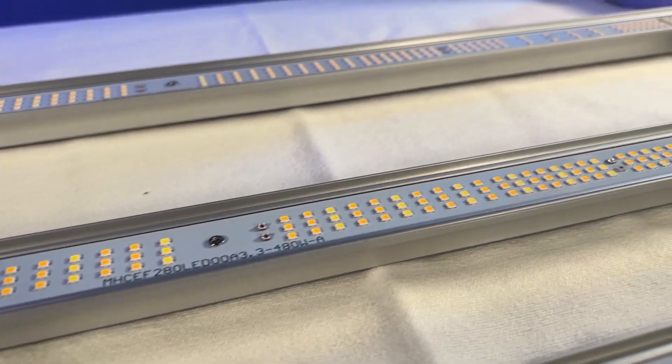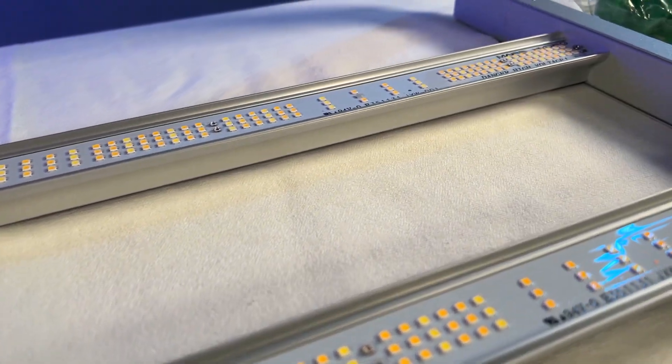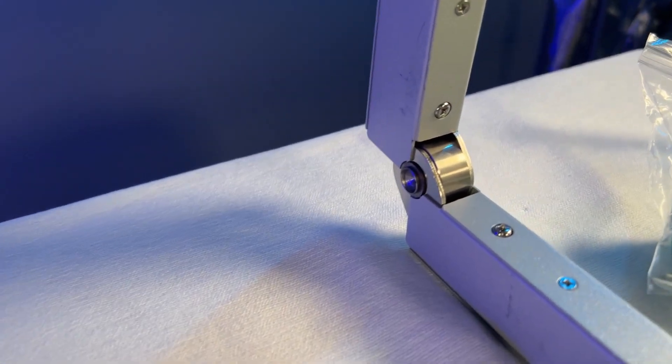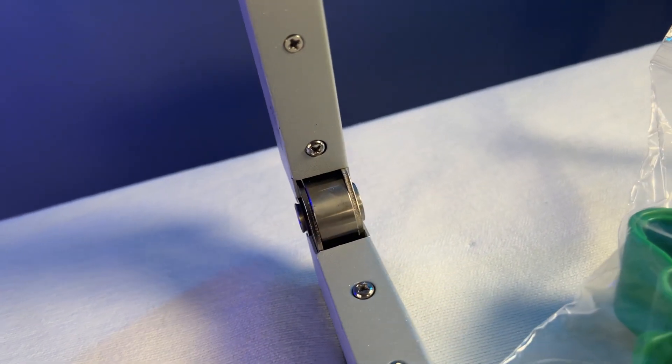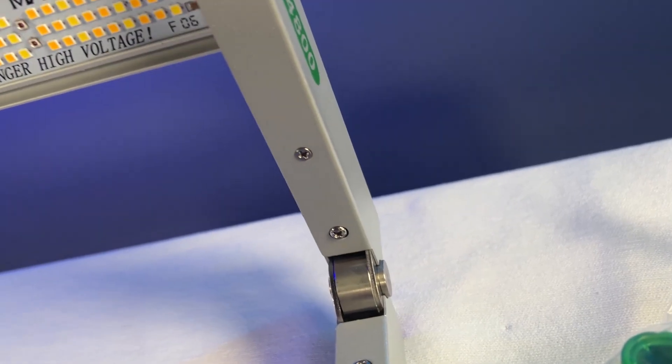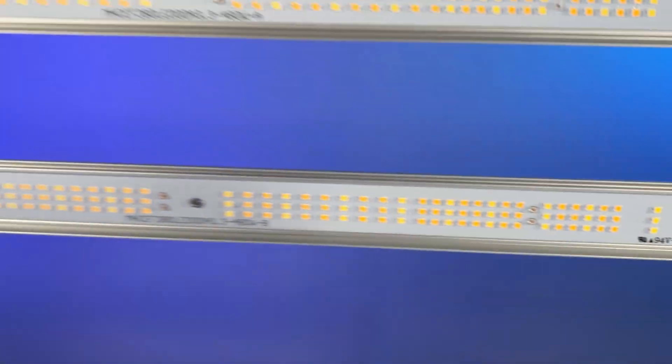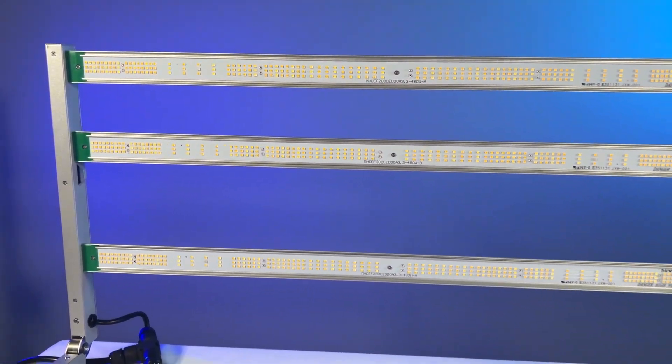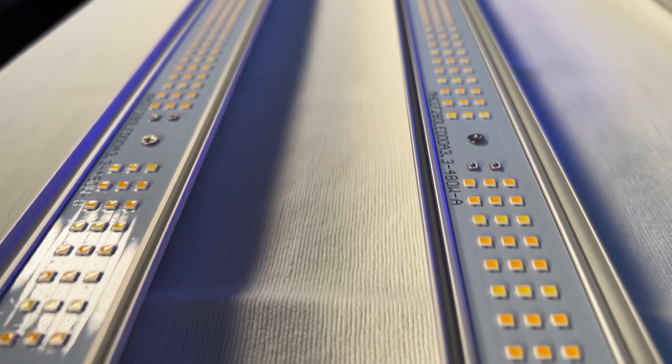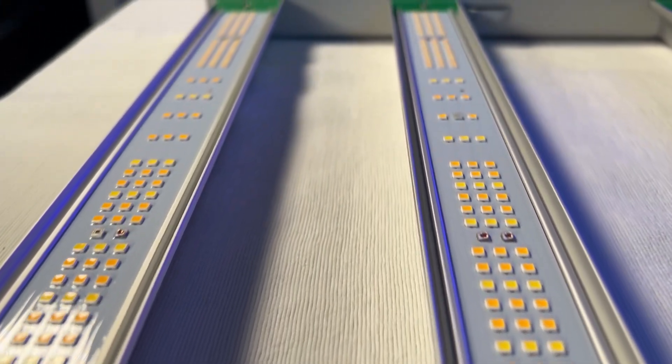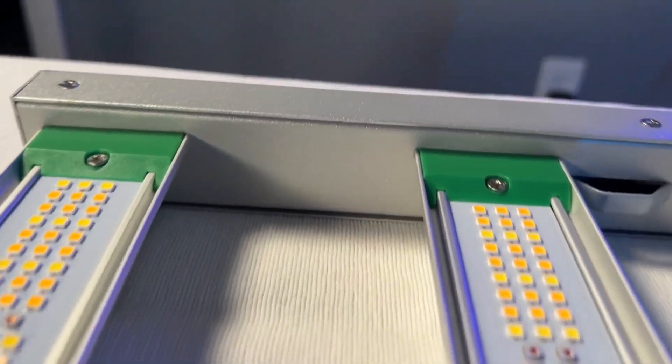I got this light opened up and you can see that it is jam-packed with Samsung diodes. These are top bin horticulture diodes. And those Samsung diodes are going to crank out that full-phase spectrum. So feel free to use this light from seed all the way to bloom. And Mars Hydro boasts about an enhanced blue light and red light. Blue promotes growth, red really helps those plants mature.